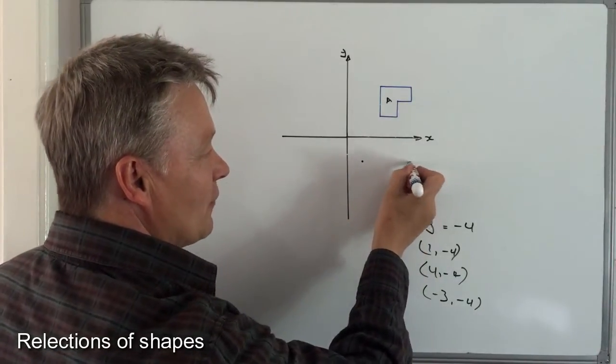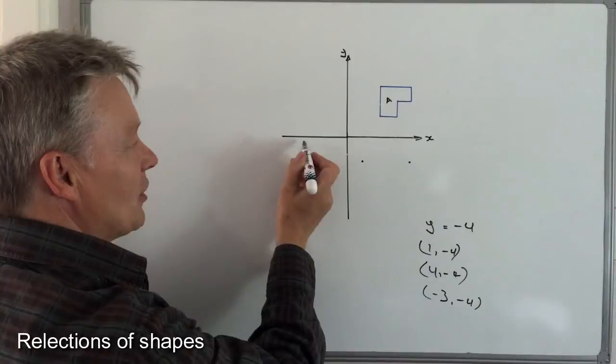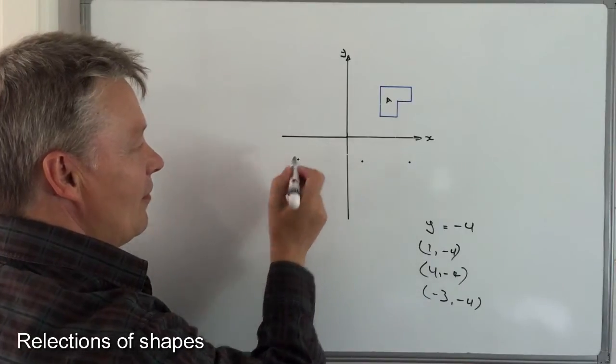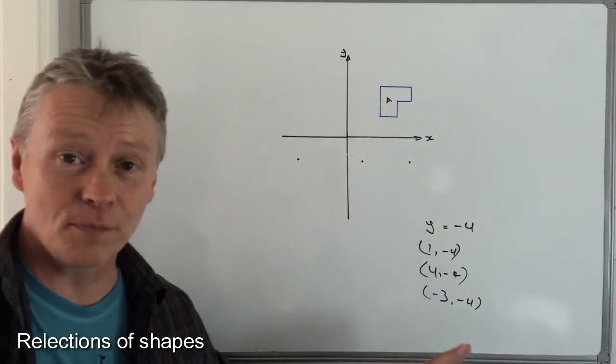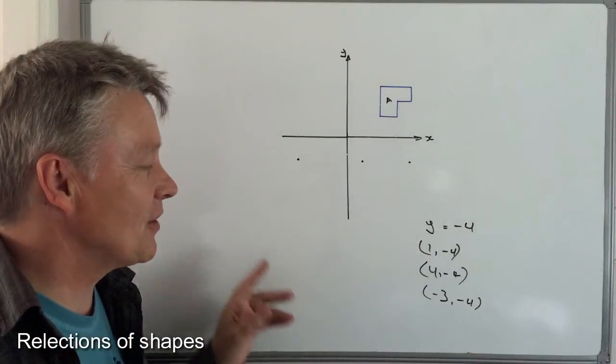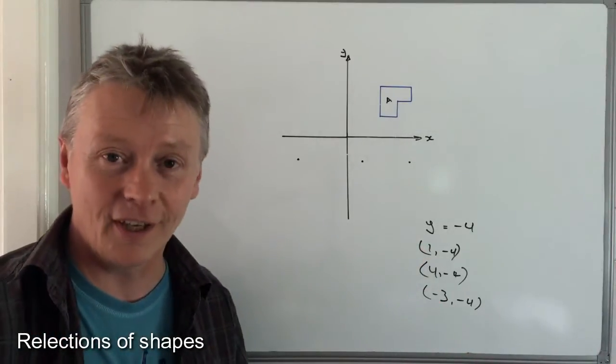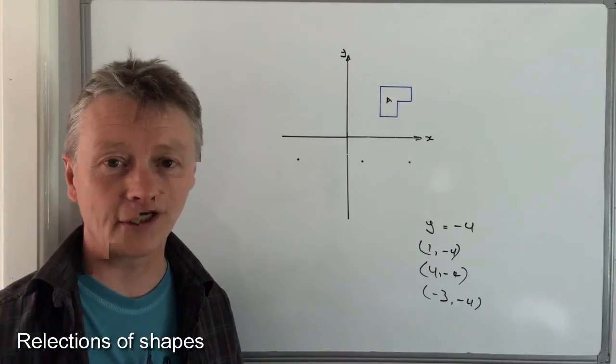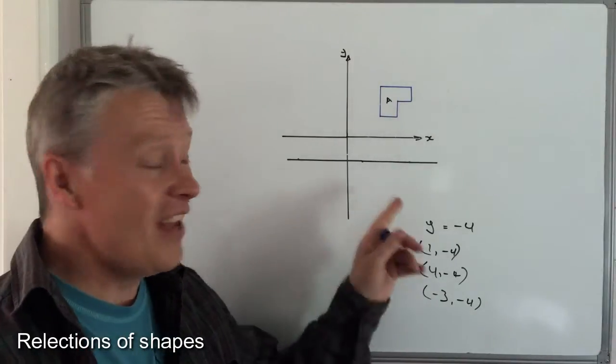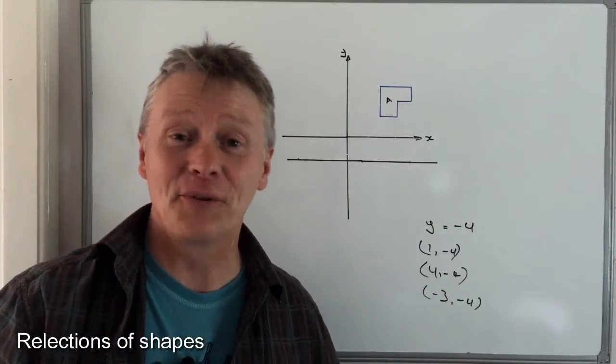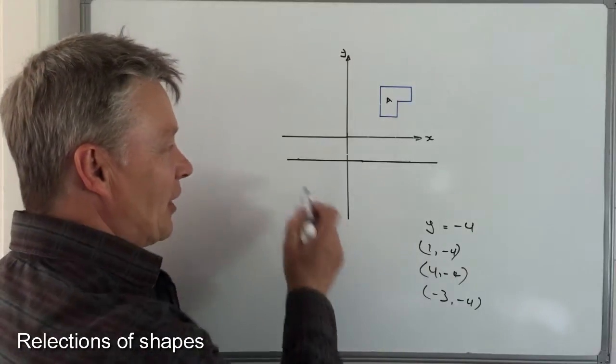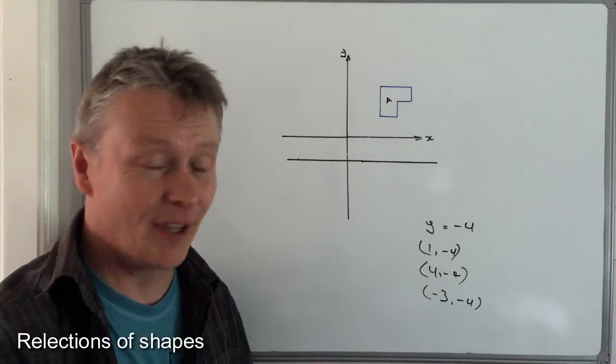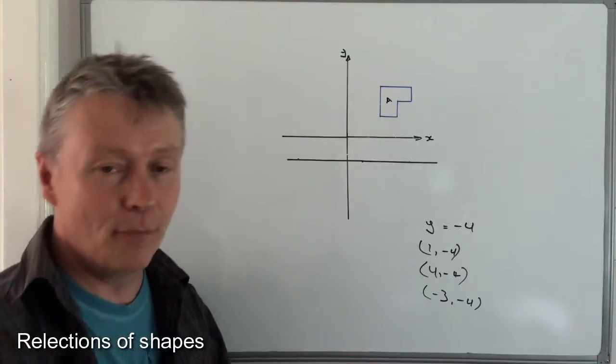So when I join those points up, which I'm going to do in a minute or two, that will give me the mirror line that they want me to reflect the shape in. So this is the line where y equals minus four because what I've done is plotted these coordinates and joined up the line. And then it's just a case of making sure that I reflect accurately.